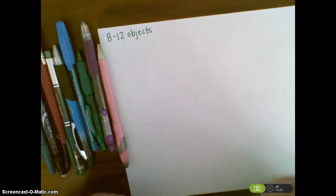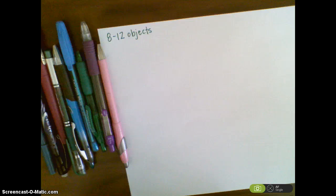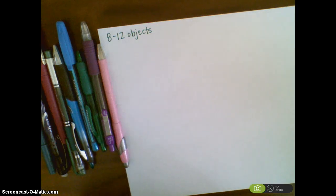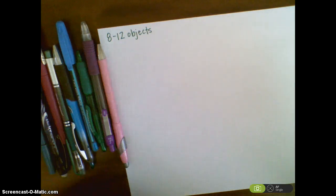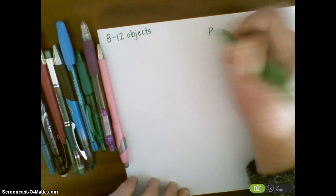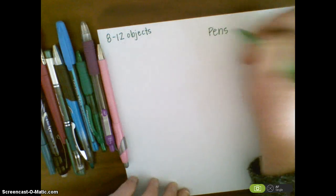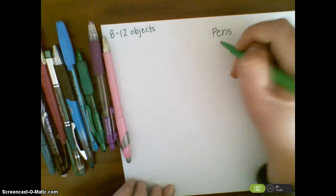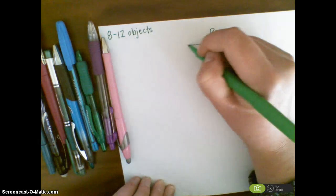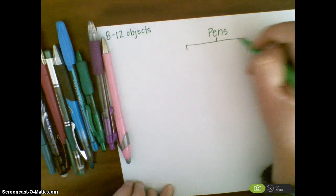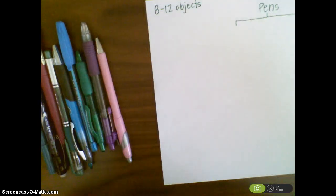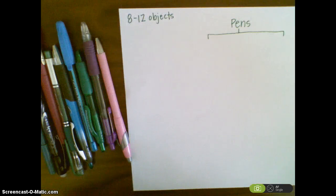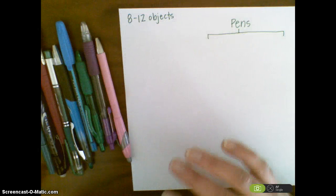First, get a piece of paper to create your dichotomous key. I'm going to give mine a heading called 'Pens' since all my objects are pens. What I need to do is take all my objects and put them into two separate categories — if you remember with our shoe activity, we separated them into two categories first.